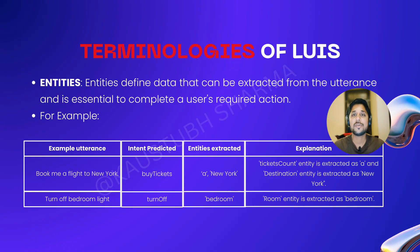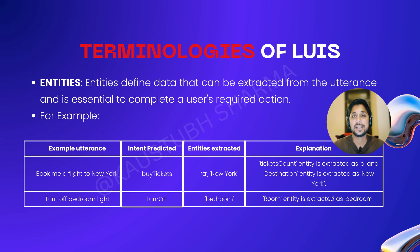Now let's talk about entities. Entities are the key pieces of information within an utterance that LUIS identifies and extracts. Going back to our flight booking example, if a user says 'book a flight to Paris,' the entity here would be the destination, which is Paris. LUIS recognizes and extracts entities, making it possible to gather essential details from user input.